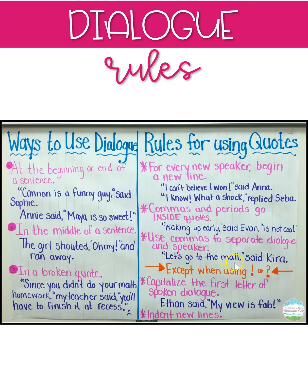Don't forget to use commas to separate the dialogue and the speaker. For example: 'Let's go to the mall,' said Kira. Keep in mind, though, that if you are using an exclamation point or a question mark, you can replace the comma with either of those punctuation marks. Also, capitalize the first letter of any dialogue. In the example, Ethan said, 'My new view is fab.' You can see that the M in 'my,' which is the first word of the spoken dialogue, is capitalized.